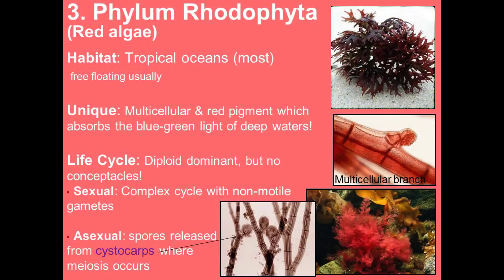Phylum Rhodophyta — the red algae — are found mostly in tropical oceans. They have a different type of red pigment called phycobilin, which does better in warmer waters. Typically free-floating with many gas-filled chambers on the surface. They're unique because they're multicellular with red pigment that absorbs the blue-green light of deep water. Their life cycle is diploid dominant, much like brown algae, but with no conceptacles. They have a complex sexual cycle with non-motile gametes; asexually, spores are released from cystocarps where meiosis occurs.